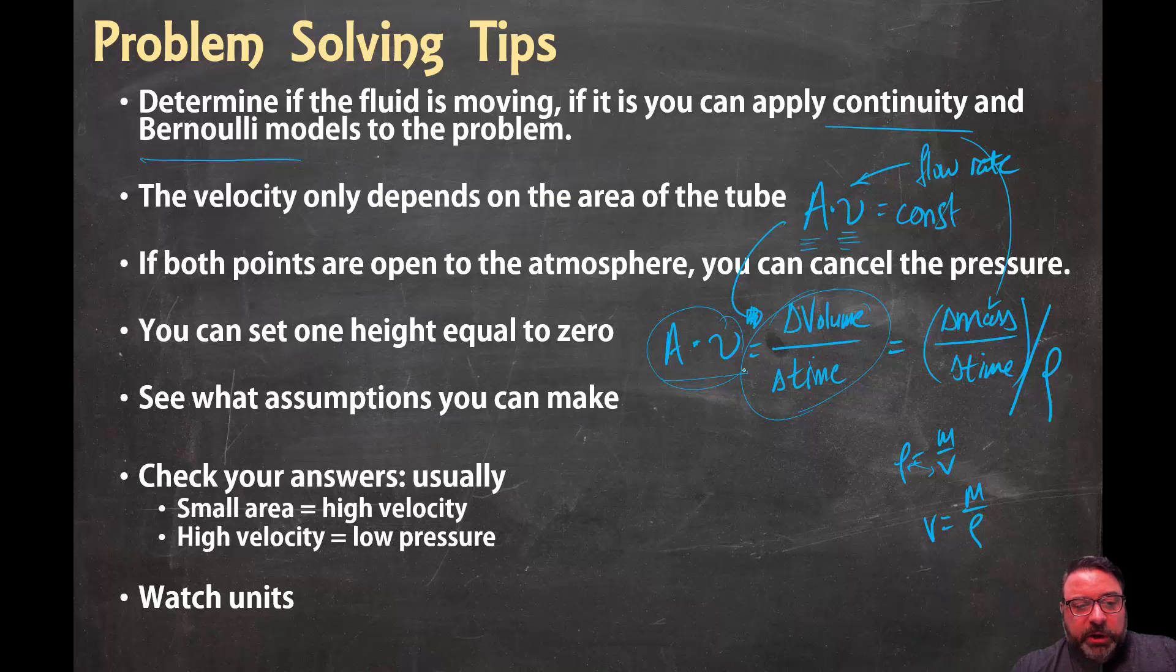The velocity only depends on the area. It doesn't depend on the pressure. It doesn't depend on the height. Purely on the area. So if you need the velocity and you have a velocity somewhere else and the size of your tube, if it's changing, you can always find the other velocity.